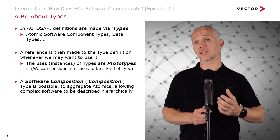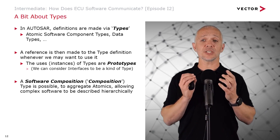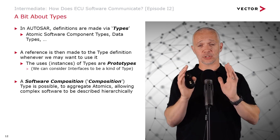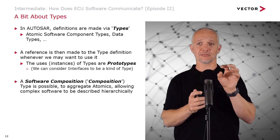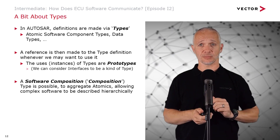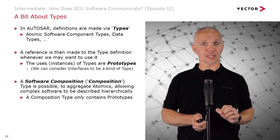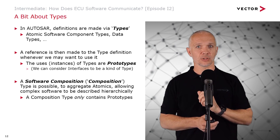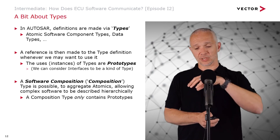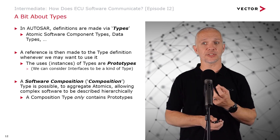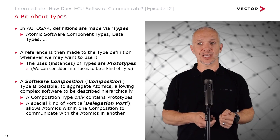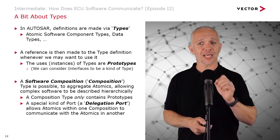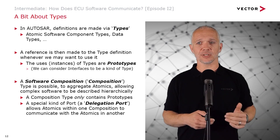Another important kind of type is the software composition type, or composition for short. Compositions allow us to aggregate atomics, and this allows us to describe complex software in a hierarchical fashion - taking larger building blocks or sets consisting of many atomics and deploying those into our system-level design at the virtual function bus. A composition type only contains prototypes, so anything we want to put in there has to be defined as a type. Compositions can contain more compositions, but eventually of course we get down to atomics, which is where the real behavior is. We also have a special kind of port called a delegation port that allows atomics within one composition to communicate with atomics in another, regardless of the number of layers of hierarchy in between.